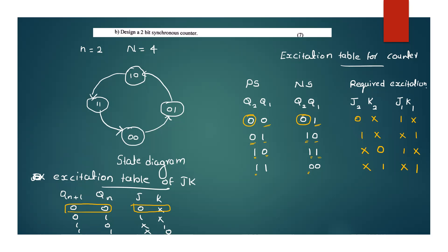We will now solve the minimum expression using a K-map. We set up the K-map with present state variables Q2 and Q1. The K-map values for J2 are filled in: positions are 0, 1, 0, 1 for the Q1 axis. The J2 values entered are: 0, 1, 1, X. Solving the K-map gives the minimal expression for J2.